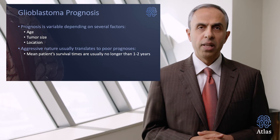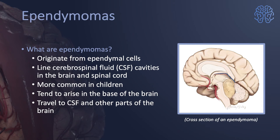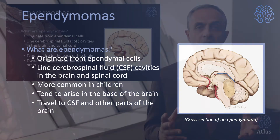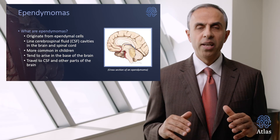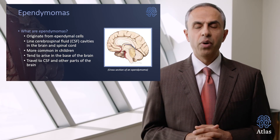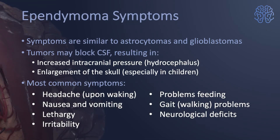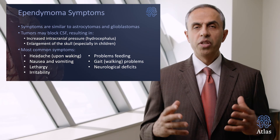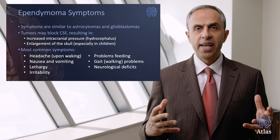Let's talk about another major class of gliomas: ependymomas. They originate from ependymal cells, which line the cerebrospinal fluid cavities in the brain and spinal cord. They are more common in children and tend to arise at the base of the brain, traveling via CSF pathways to other parts of the brain. Symptoms include increased intracranial pressure or hydrocephalus — fluid buildup within the brain and skull — which can lead to enlarged heads in children.